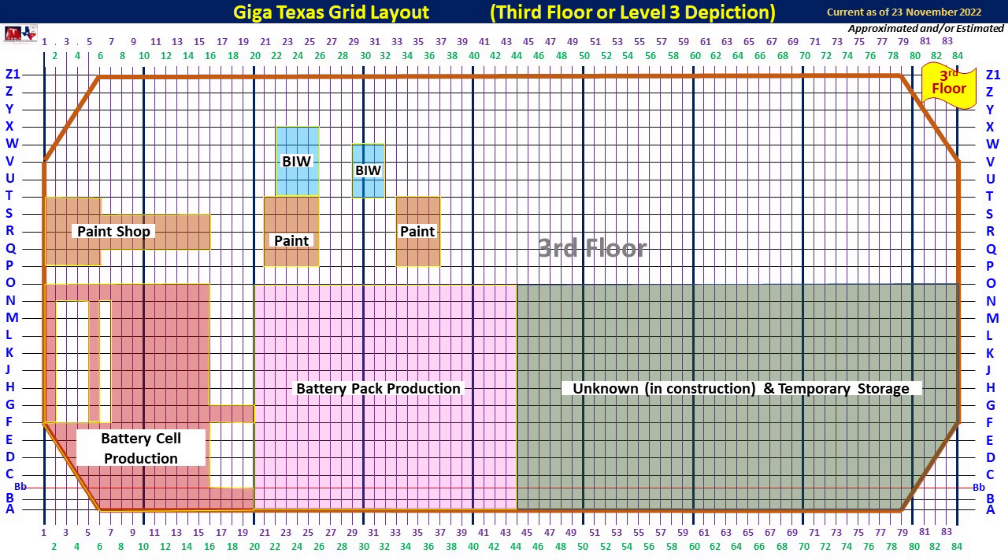Moving up another floor to the third floor, there are sections of the battery cell production, the battery pack production, an unknown under-construction and future expansion area with temporary storage currently. The paint shop has three areas that have floor number three or three and a half. The body in white also has two areas in that northern section near the paint shop that has a third floor segment.